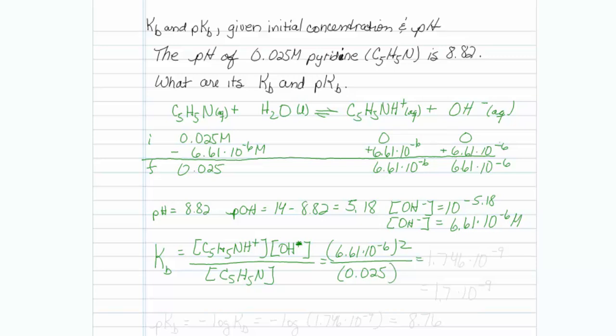Putting that into my calculator, I get 1.746 times 10 to the minus 9. So just doing it with sig figs, my kB would be equal to 1.7 times 10 to the minus 9.